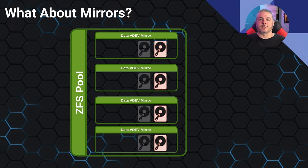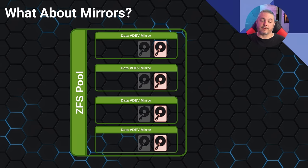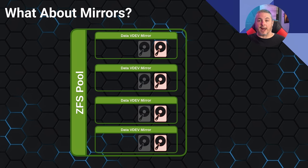What about mirrors? And yes, there are already comments saying 'just use mirrors.' Mirrors do follow the same symmetry rule since a mirror is a type of RAID. The downside of mirrors is storage inefficiency — you're using an extra drive for every mirror. But you get good performance and it's a valid approach. You just have to buy drives two at a time when you expand, trading some capacity for the ease of expansion.